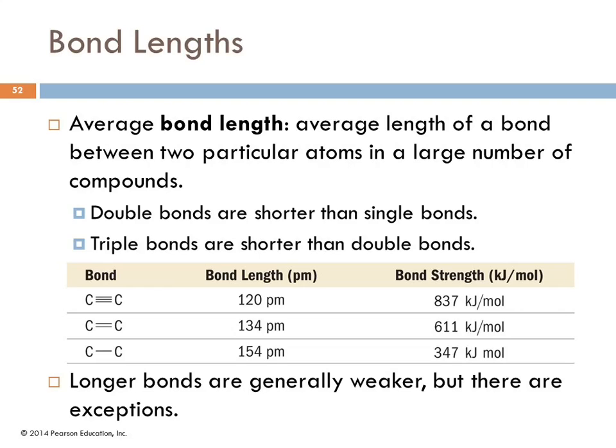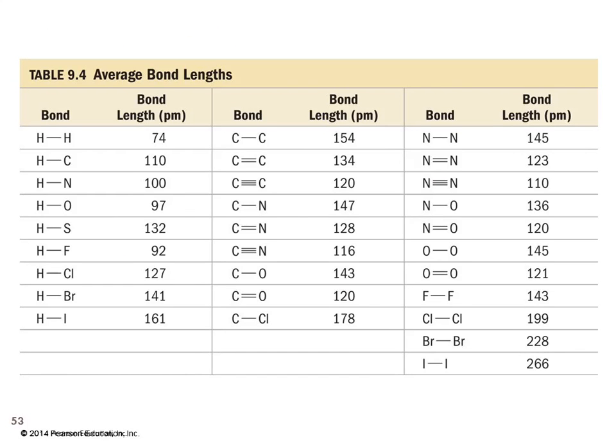Average bond length is the average length of a bond between two particular atoms in a large number of different compounds. The specific bond length will vary just like the energy does from compound to compound. Generally speaking, double bonds are shorter than single, triple are shorter than double. If we look at the carbon bonds, we see a carbon-carbon single bond is 154 picometers. The double is 134. The triple is 120. They get shorter, and the bond strength gets greater. Longer bonds usually are weaker. If we think about Coulomb's Law, the distance between the charged objects affects the strength of attraction. So that makes sense. There are exceptions to that. These are average bond lengths. This was Table 9.4 I was inadvertently referring to.